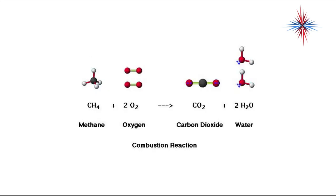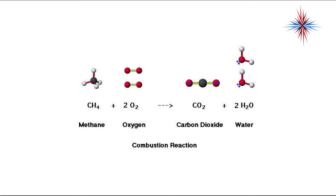It's a chemical reaction between methane and oxygen, caused by heat, that produces carbon dioxide and water. So the products of combustion are carbon dioxide, water, heat, and light. Stoichiometric combustion is the term for perfect combustion — the burning of fuel with the exact amount of oxygen needed to change the carbon and hydrogen molecules into water and carbon dioxide.